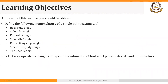By the end of this lecture, you should be able to define the following nomenclature of a single point cutting tool: the back rake angle, side rake angle, end relief angle, side relief angle, end cutting edge angle, side cutting edge angle, and the tool nose radius.